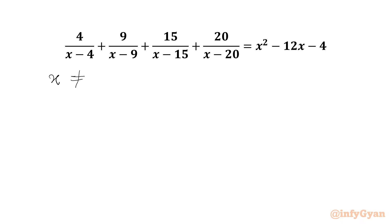We can write: denominators cannot be 0. So our answer X cannot be 4, cannot be 9, cannot be 15, and cannot be 20.